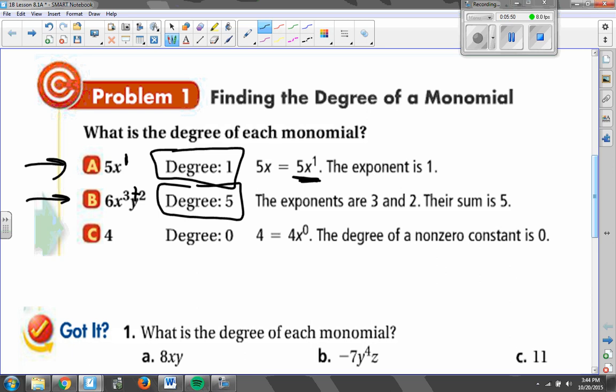And finally, the example is c. 4 doesn't have any letters or any variables attached to it, which means my degree is 0. There is no variable there for the degree to be counted.